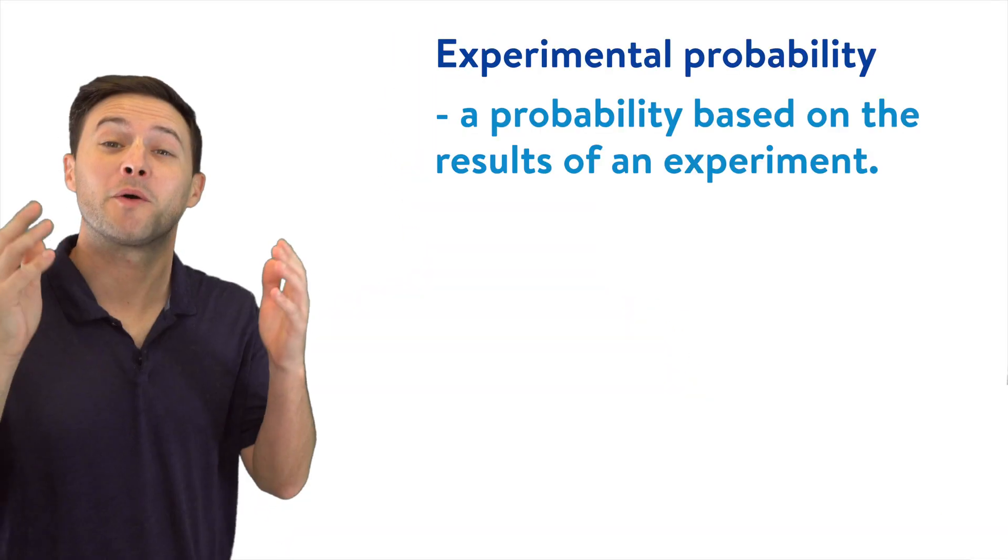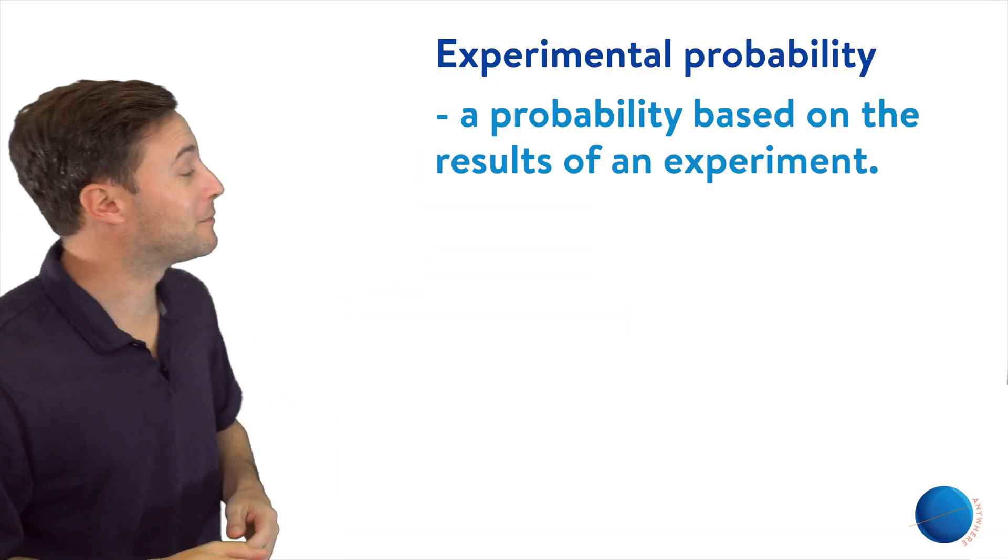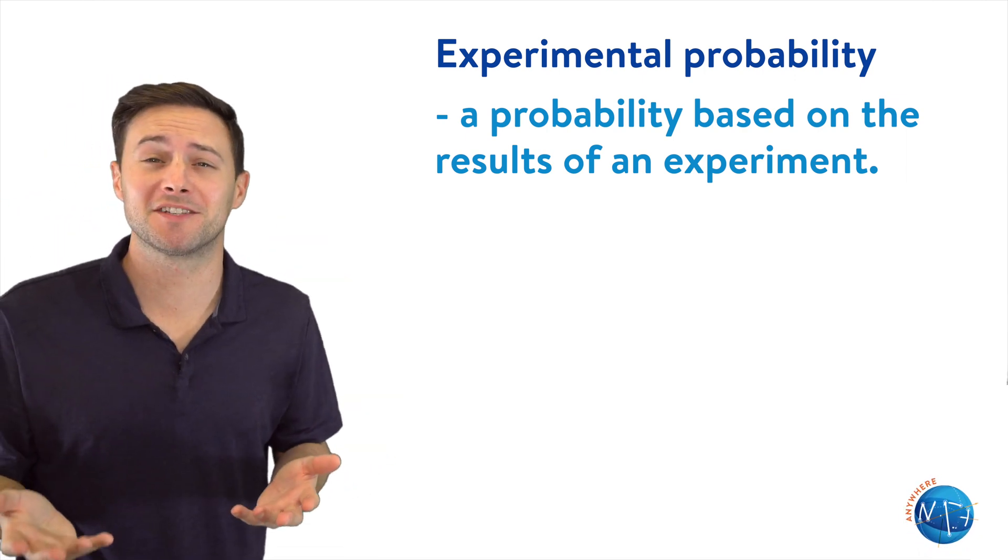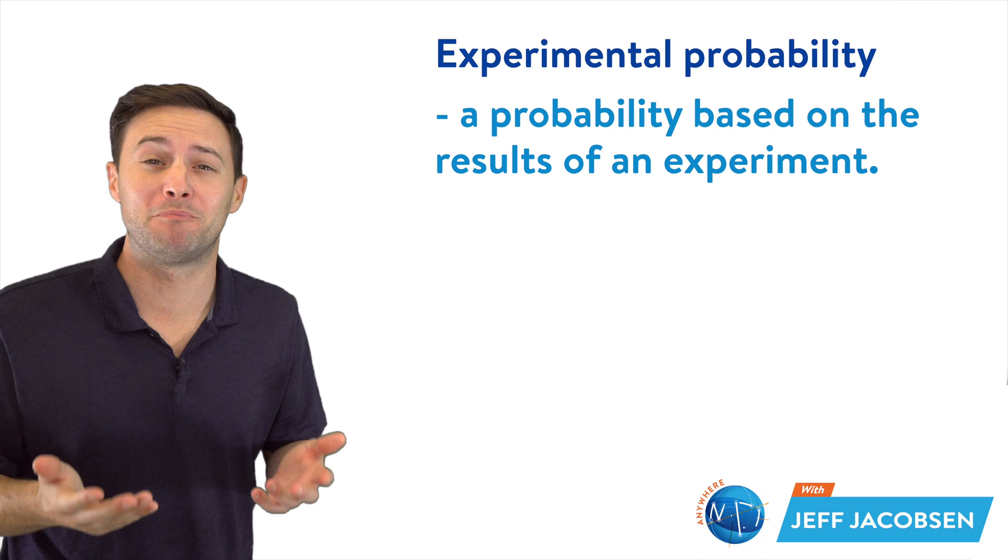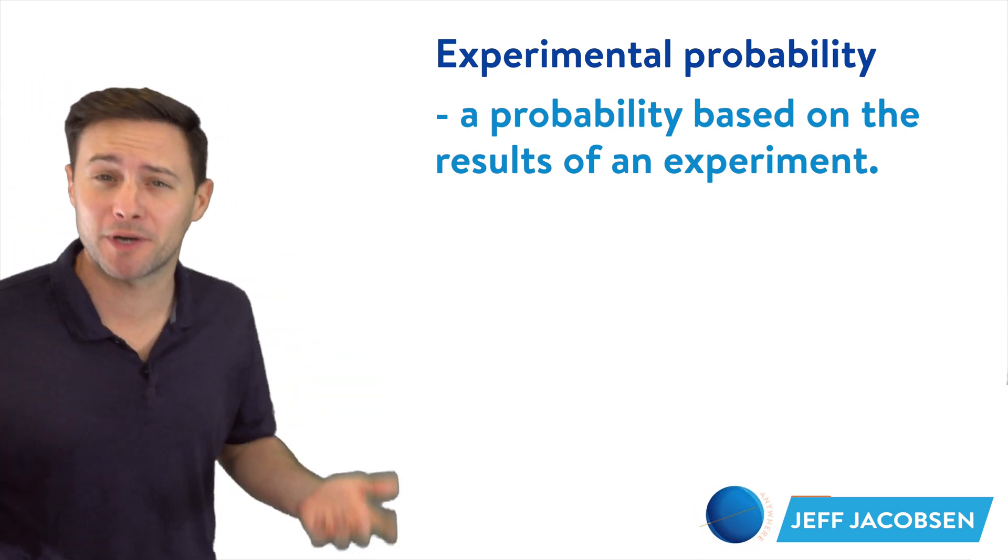Today we're doing part one of two video lessons on experimental and theoretical probability. Let's get to it. We're going to start with experimental probability, and just like the name suggests, experimental probability is just a probability based on the results of an experiment.